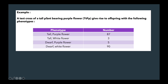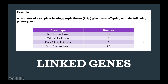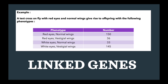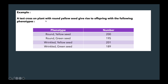For example, a test cross of a tall plant bearing purple flowers gives offspring with two large numbers and two significantly lower numbers — indicating linked genes. Similarly, a test cross on a fly with red eyes and normal wings shows two big numbers and two significantly lower numbers, confirming the two genes are linked. By contrast, a test cross on a plant with round yellow seeds shows numbers very close to each other, following a 1:1:1:1 ratio, meaning the two genes are not linked and this is a dihybrid cross.